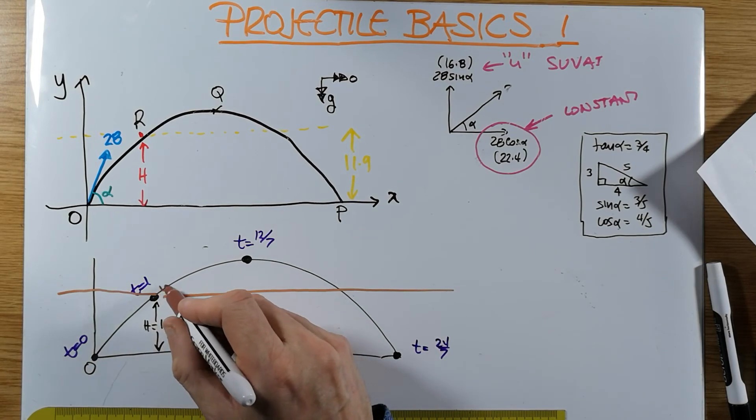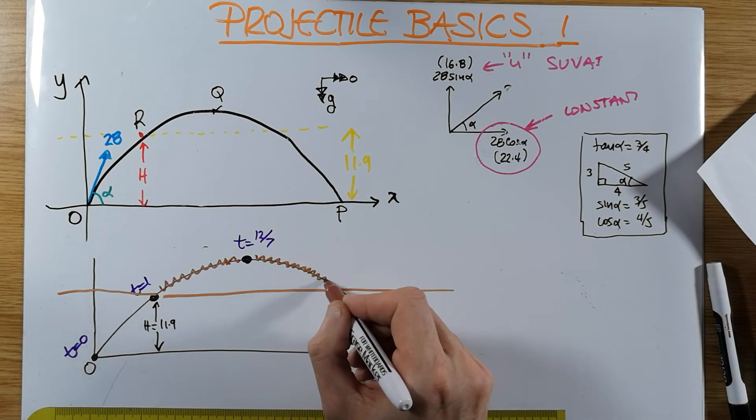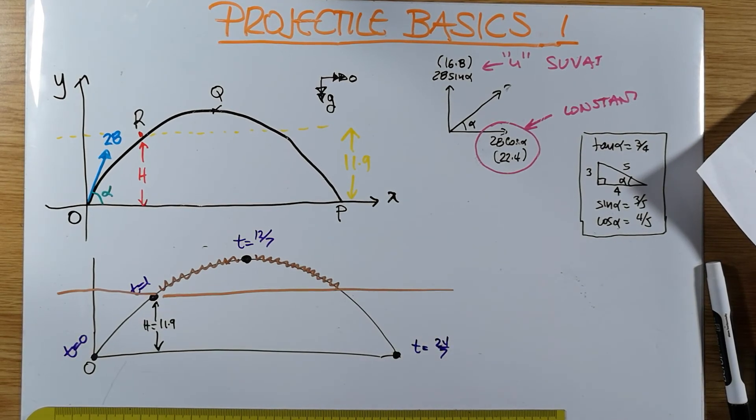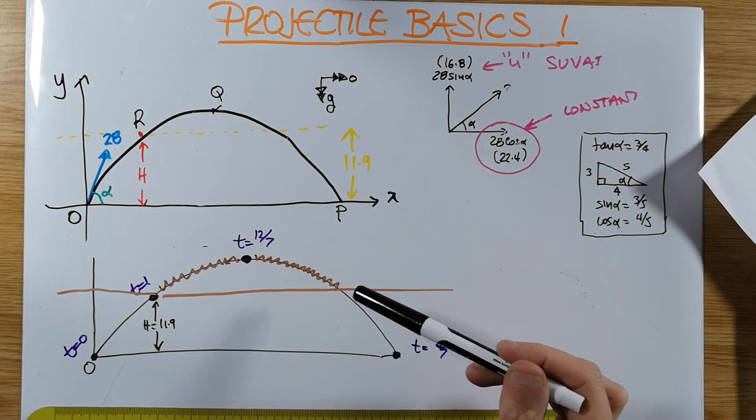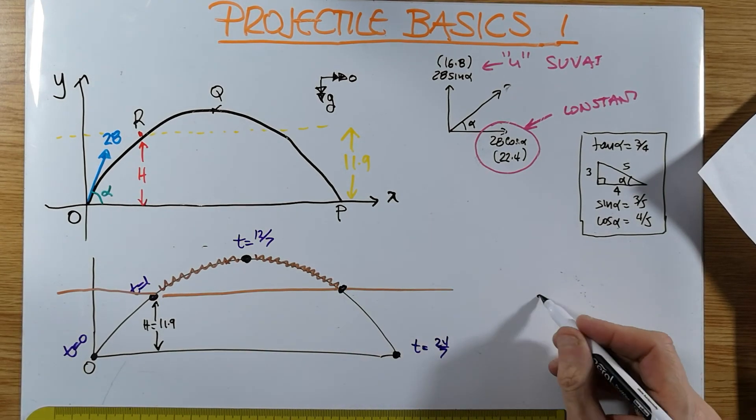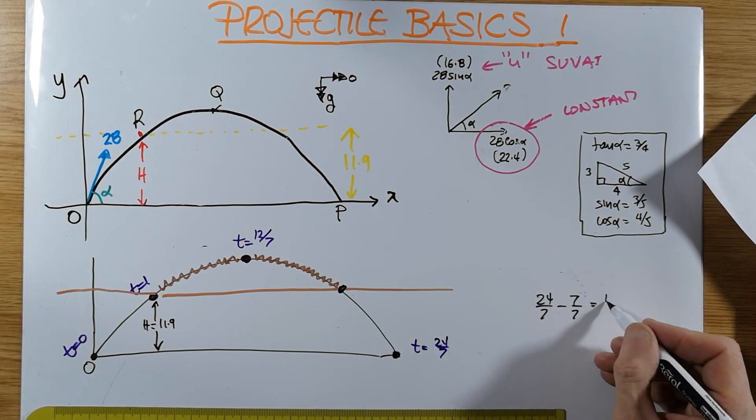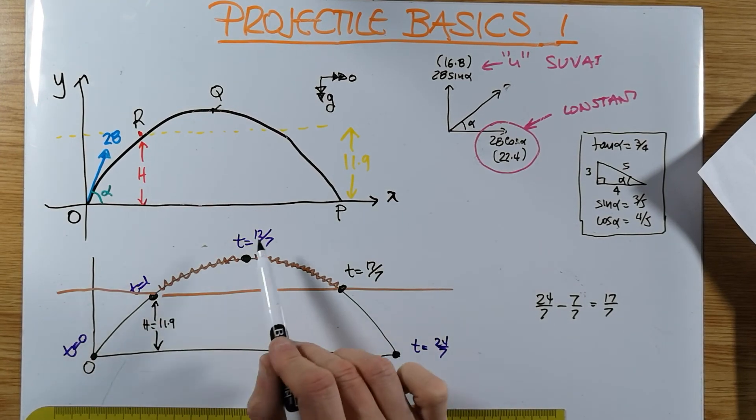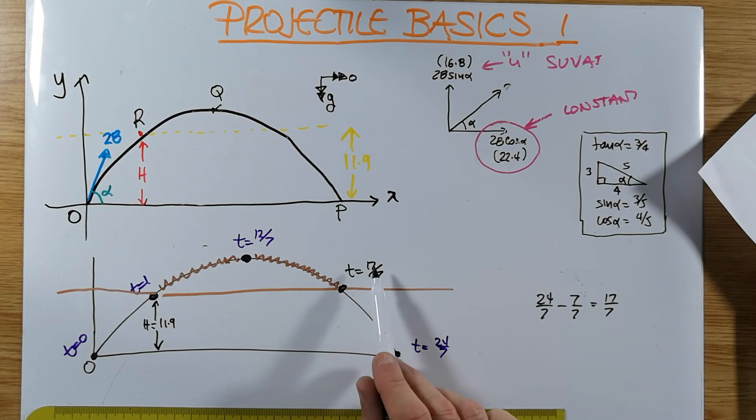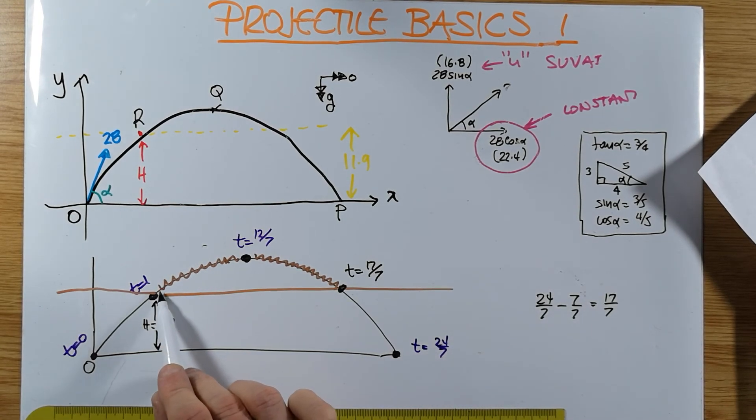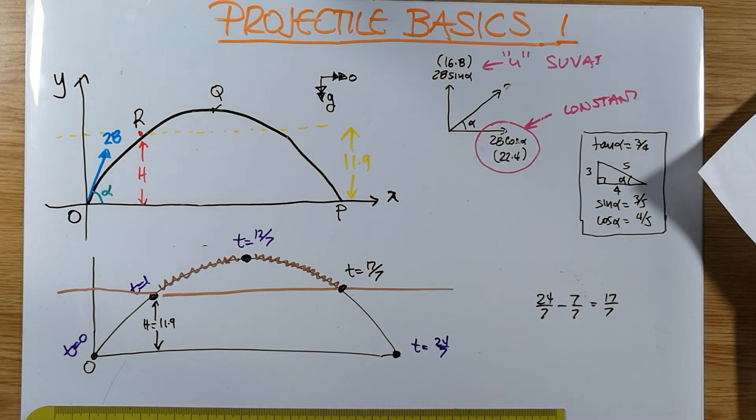This is now the height of 11.9 meters from the ground. So the particle, all these positions here that I'm shading in brown, the particle will be above 11.9 meters. So the question is, how long does it take to reach there? Well, the answer is very simple because of symmetry. If it takes one second to reach from O to this point here, it will take one second to drop from this position here down to the ground. So 24 over 7, take away 1 second, which is 7 over 7, will give you 17 over 7. So the time here is 17 over 7. So 0, 1 second, 1 and 5 sevenths of a second. Here is 2 seconds and 3 sevenths of a second. And here it will be 3 seconds and 3 sevenths of a second.